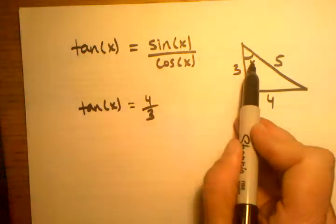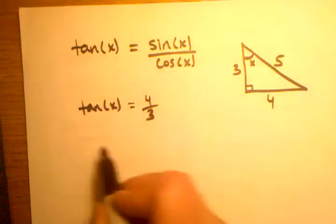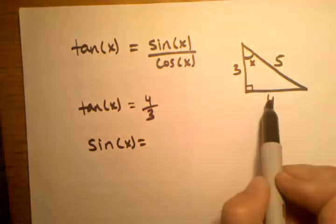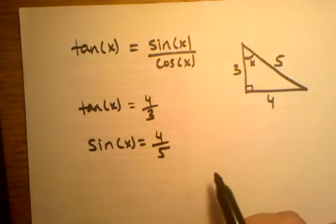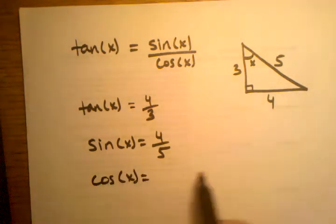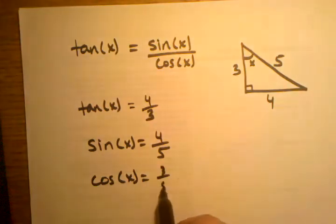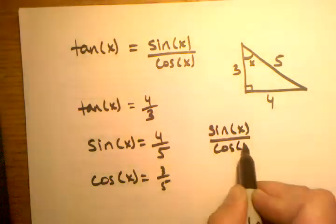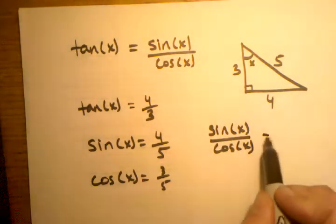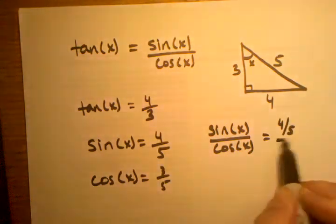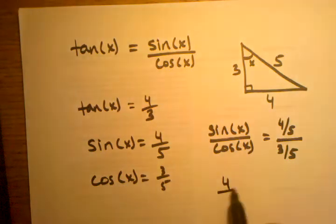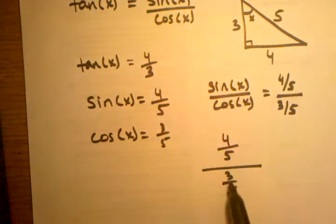If I chose to find the sine of this angle, I would find opposite over hypotenuse, which is four-fifths. And if I wanted to find the cosine of that angle, I would get the adjacent side over the hypotenuse, which is three-fifths. Now, if I wrote the measurement of sine x over cosine x, I would end up with four-fifths over three-fifths.